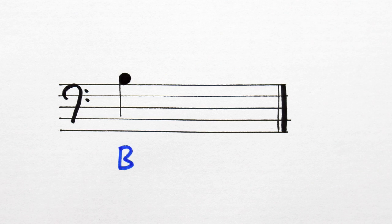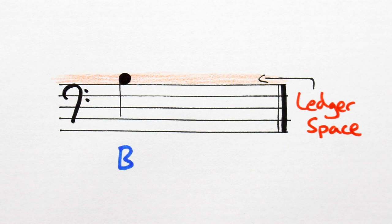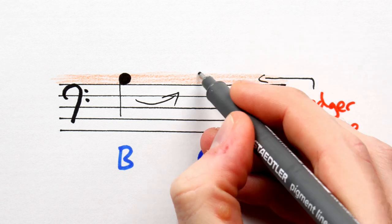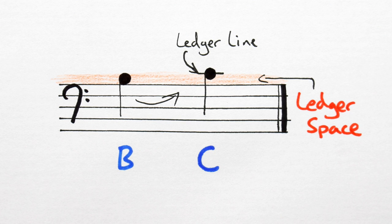Up top, B is written in the first ledger space above the bass stave. And C is written above B on the first ledger line. All pretty standard stuff.